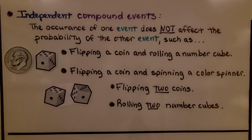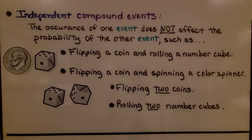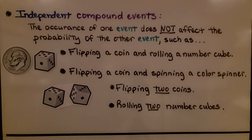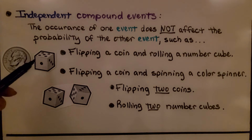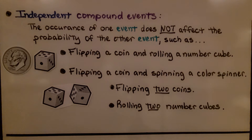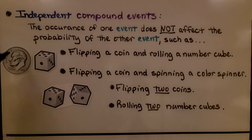For independent compound events, the occurrence of one event does not affect the probability of the other event — such as flipping a coin and rolling a number cube, flipping a coin and spinning a color spinner, flipping two coins, or rolling two number cubes. One outcome doesn't affect the other outcome.